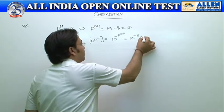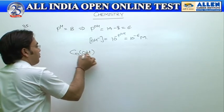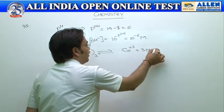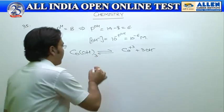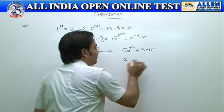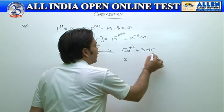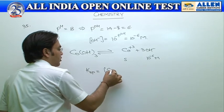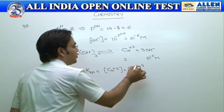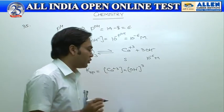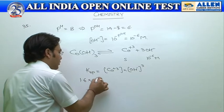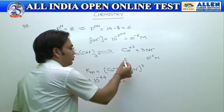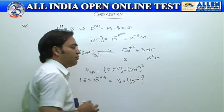Now we will dissociate cobalt hydroxide: it gives Co³⁺ and 3 OH⁻. If solubility is s, this is s and 10 to the power minus 6 M. Now KSP equals Co³⁺ times OH⁻ cubed. KSP is given in the question: 1.6 times 10 to the power minus 44. The concentration of Co³⁺ is equivalent to solubility s.